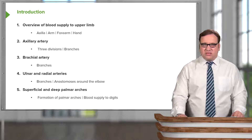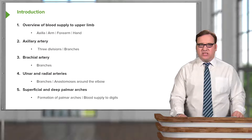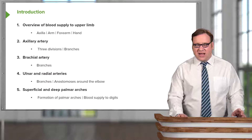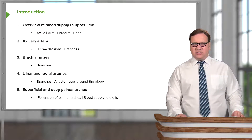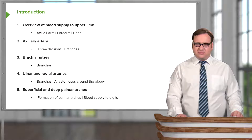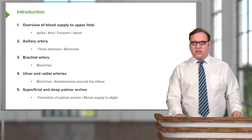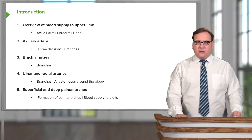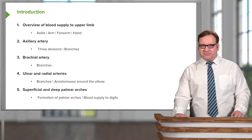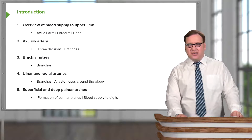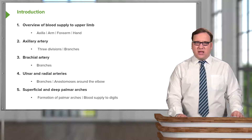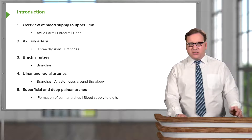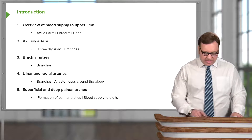We'll look at the axillary artery, its three divisions and the various branches. We'll look at the brachial artery and its branches. We'll look at the ulnar and radial arteries, the branches that come off these, and also the anastomosis they form around the elbow. We'll then look at the blood supply to the hand and the superficial and deep palmar arches, how they're formed from the radial and ulnar arteries, and how they give rise to blood vessels that supply the digits.